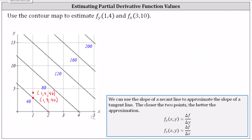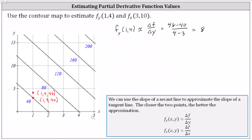Using these two points, we determine the slope of the secant line in the y direction as an estimate for the partial of f with respect to y at (1, 4). So the partial of f with respect to y at (1, 4) is approximately the change in function value divided by the change in y: (48 − 40) / (4 − 3) = 8. This means the slope of the secant line in the positive y direction is 8, which approximates the slope of the tangent line at the point (1, 4, 48).